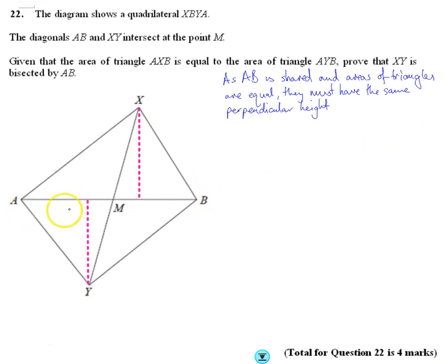Now because of the areas and because they share this side, they must have, how to define the area of a triangle. So the area is half times base times perpendicular height. So if we know the area is the same and the base is going to be the same, then we know the height is also going to be the same.